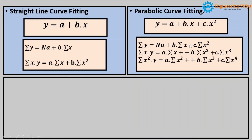Now we multiply x on both sides. Since you already know the trick — as soon as we multiply n with x, n is converted into summation of x and the remaining terms stay the same. So multiplying x in the first equation: summation of y becomes summation of x into y, n becomes summation of x, a remains the same, summation of x becomes summation of x square, and x square becomes summation of x cube.